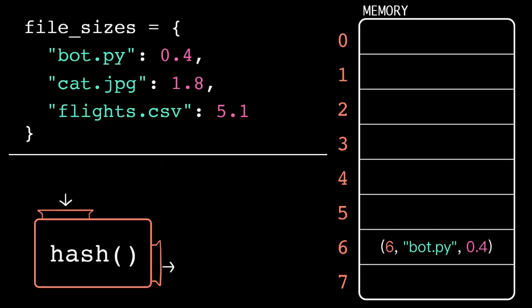And then we do the same thing for all of the other items. We hash the key to get the index, and then we store the key-value pair in that slot.